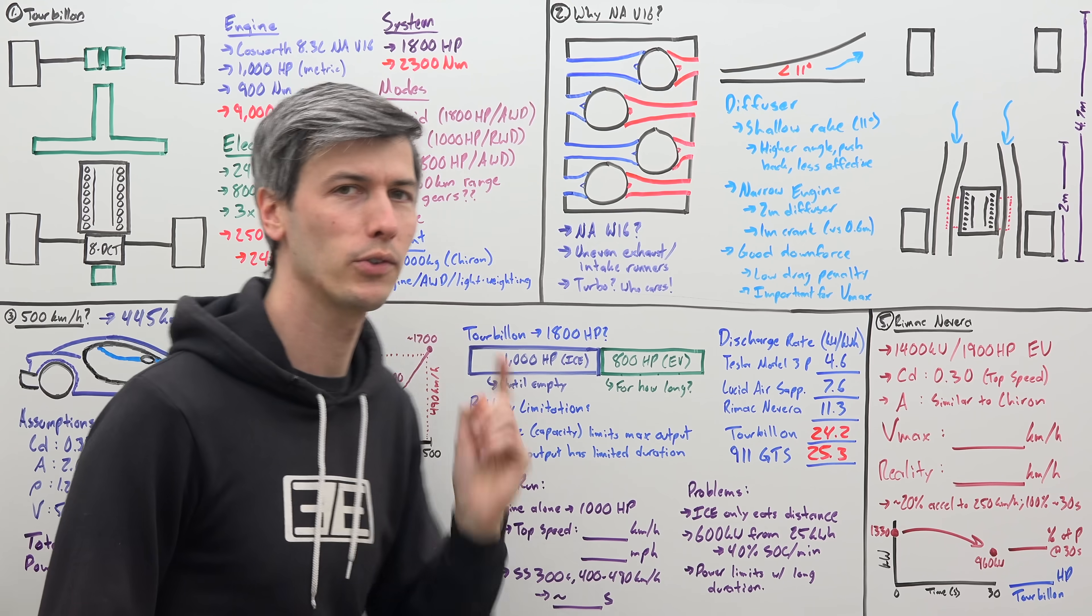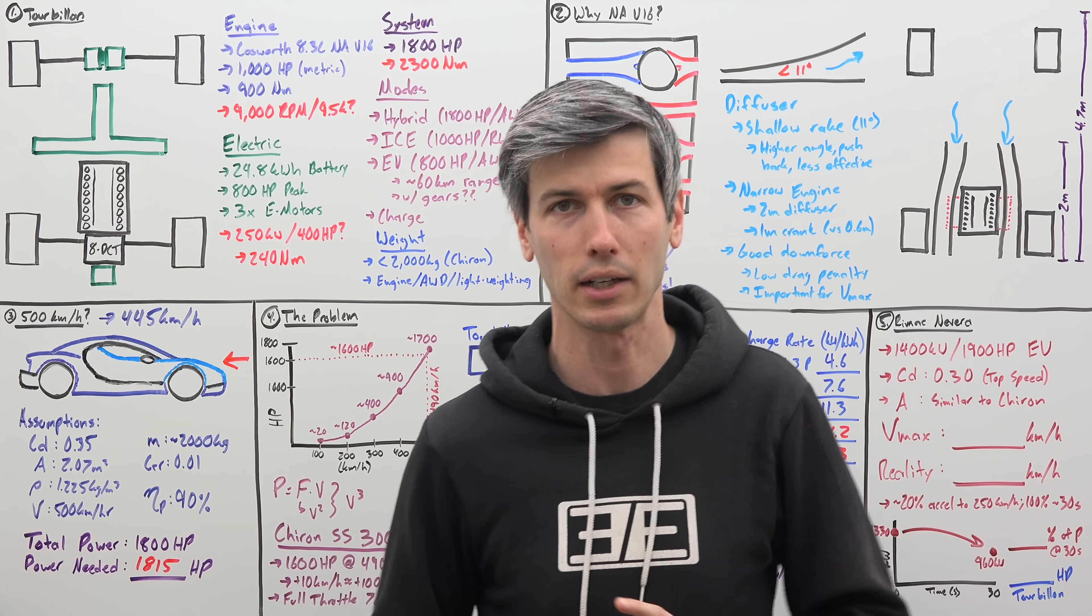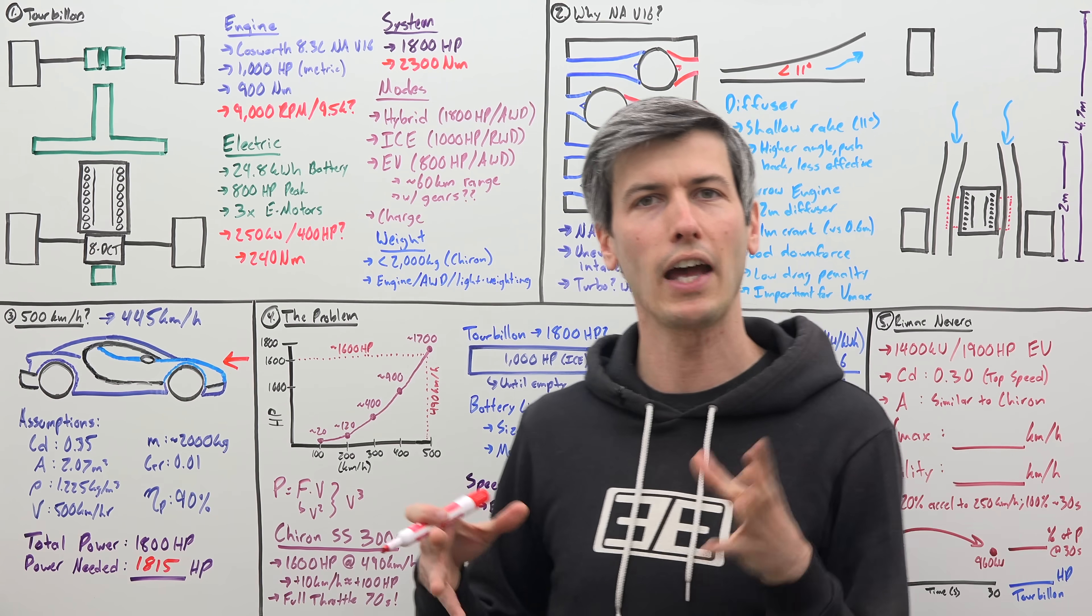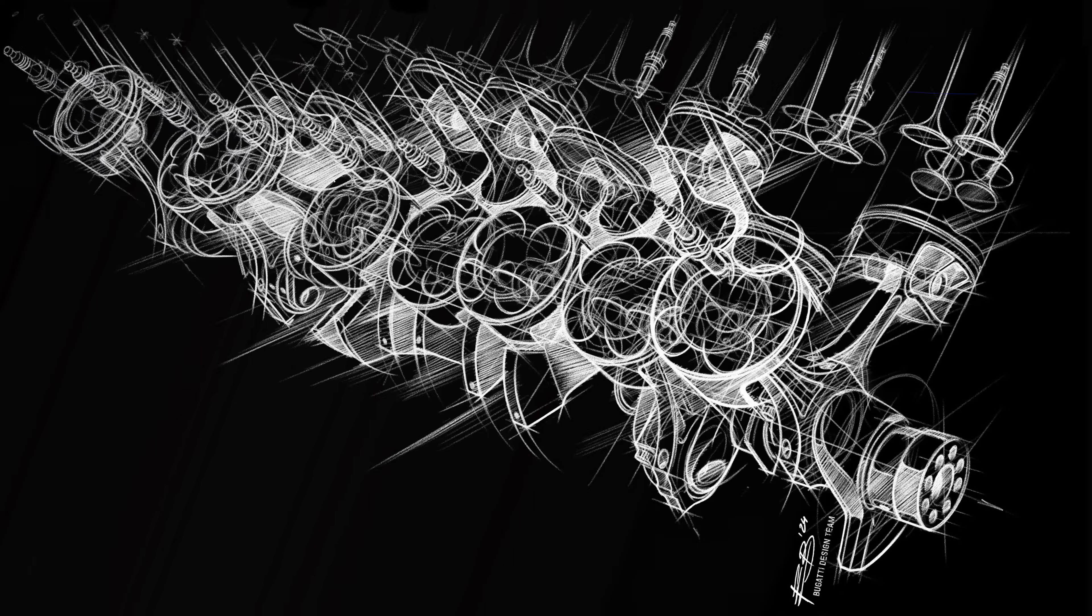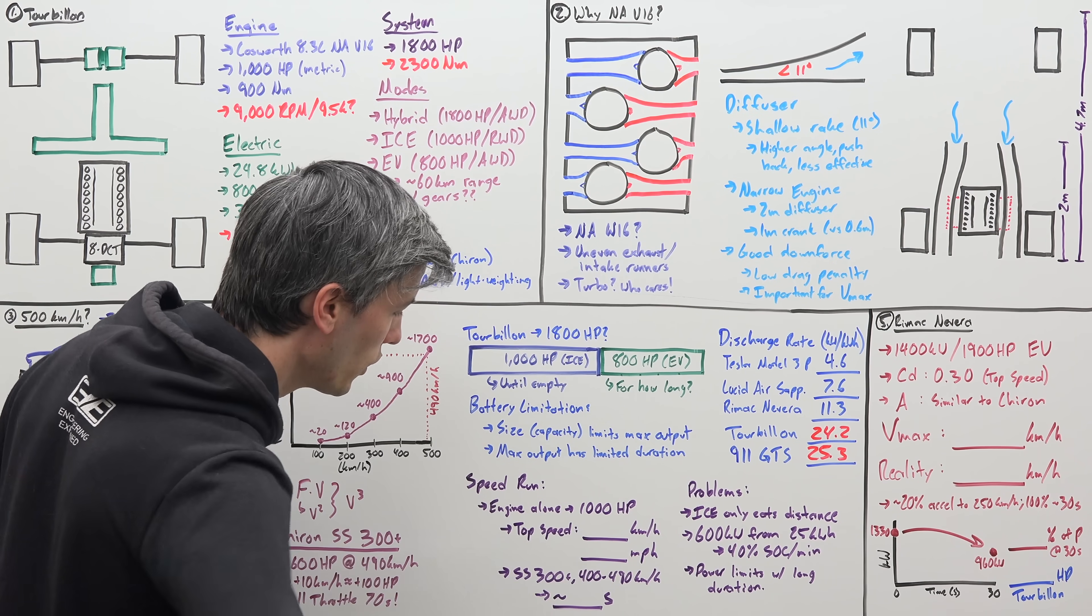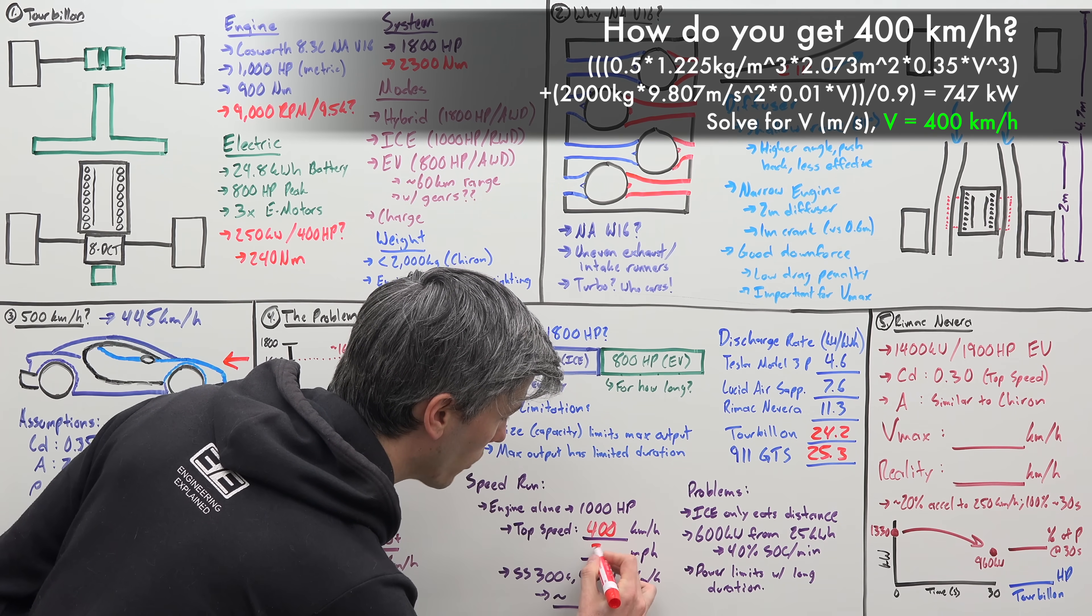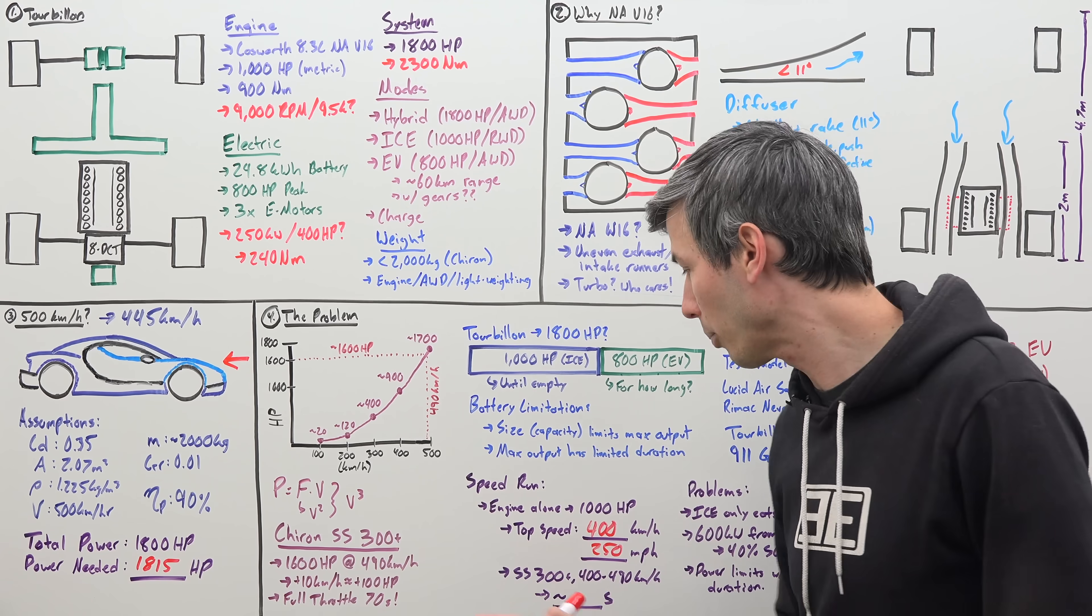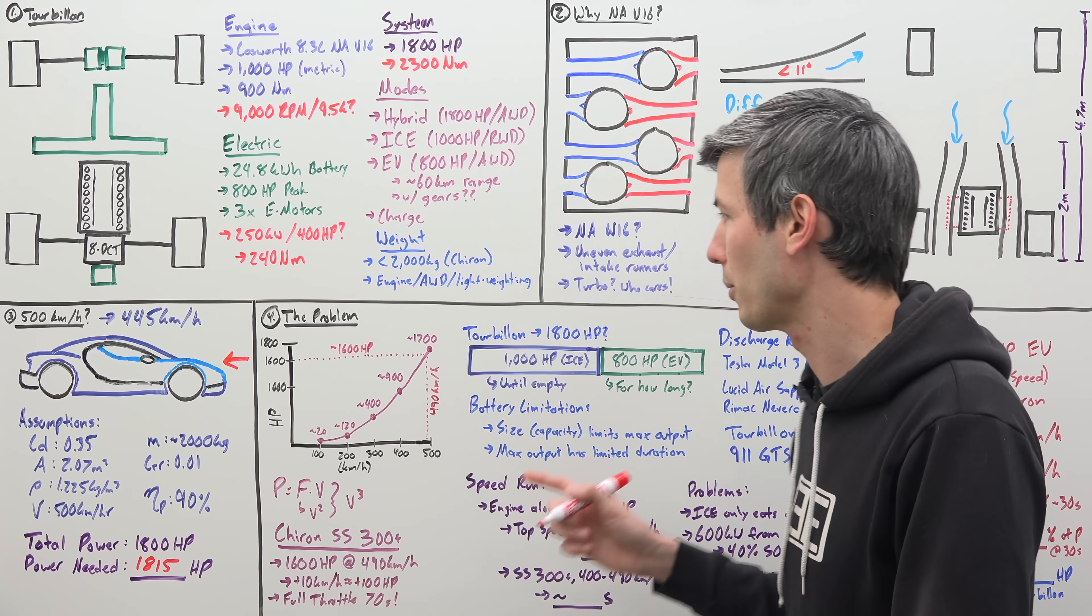And we have a 1,000 horsepower combustion engine that we can start off with. We don't have to use the electric motors to first start accelerating, right? So we can get as fast as a combustion engine can take us first to save that battery for that last little stint. Well, how fast can we get with 1,000 horsepower? For the Bugatti Tourbillon, again, making those same assumptions we made previously, if you do the math, you get a number of about 400 kilometers per hour or about 250 miles per hour that you can get to just using the combustion engine alone. So we're pretty close, right?